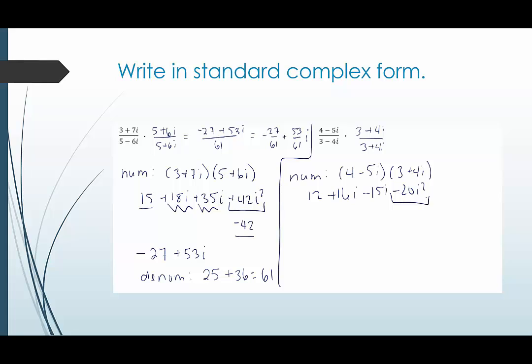So minus 20i squared, i squared is negative 1. Negative 1 times negative 20 is positive 20. Combining the like terms we have our real part 12 plus 20 is 32. And our complex part 16i minus 15i is just one single i which I can just write as i.